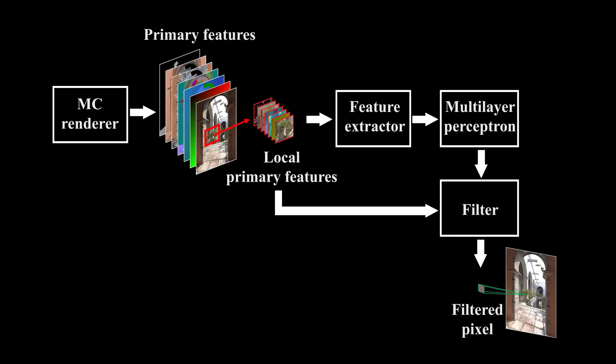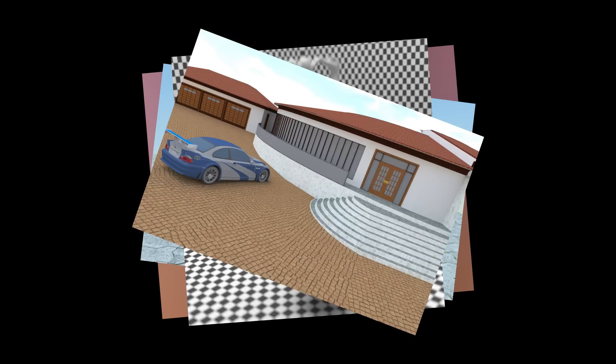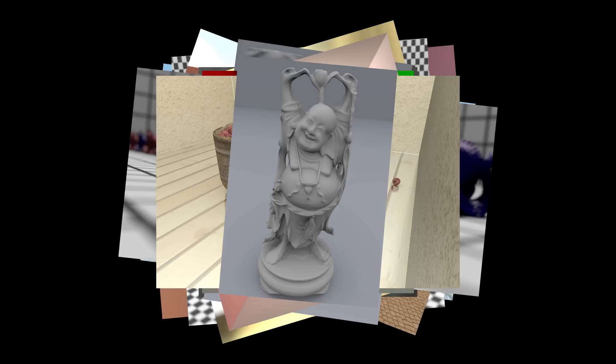This process is done for all pixels to generate a filtered image with comparable quality to the ground truth. We train the network on a set of scenes containing a variety of Monte Carlo effects, such as depth of field, area light sampling, motion blur, and global illumination. The network is trained with the iterative backpropagation process.